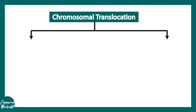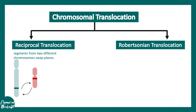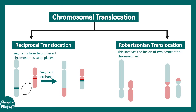Chromosomal translocation can be broadly of two categories: reciprocal translocation and Robertsonian translocation. Swapping happens in reciprocal translocation, meaning the segments of two chromosomes get exchanged with each other. In Robertsonian translocation, there is a fusion between two acrocentric chromosomes — there is a breakage and a rejoining, as you can see in this particular diagram.